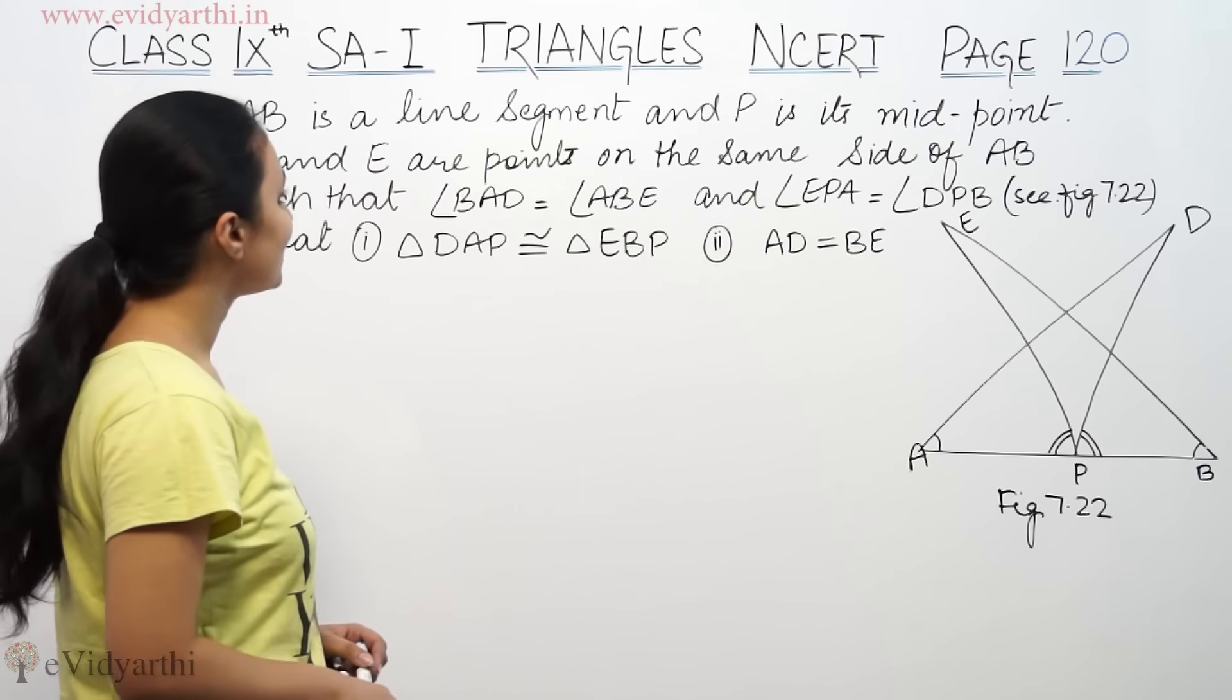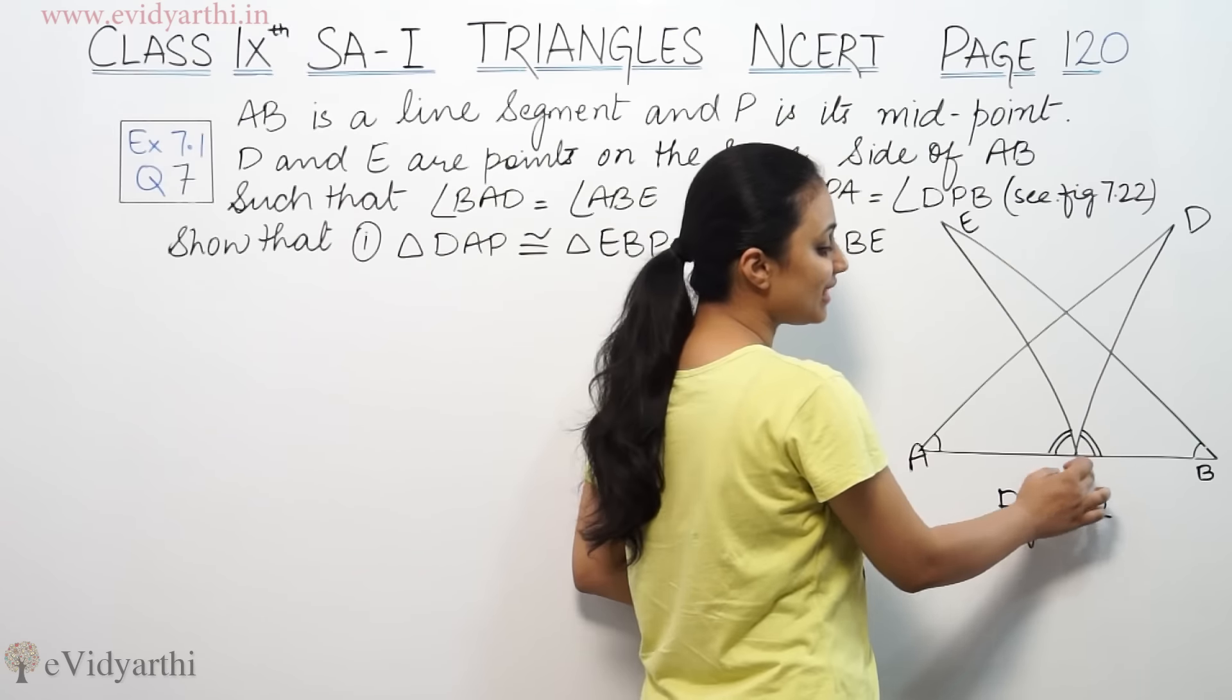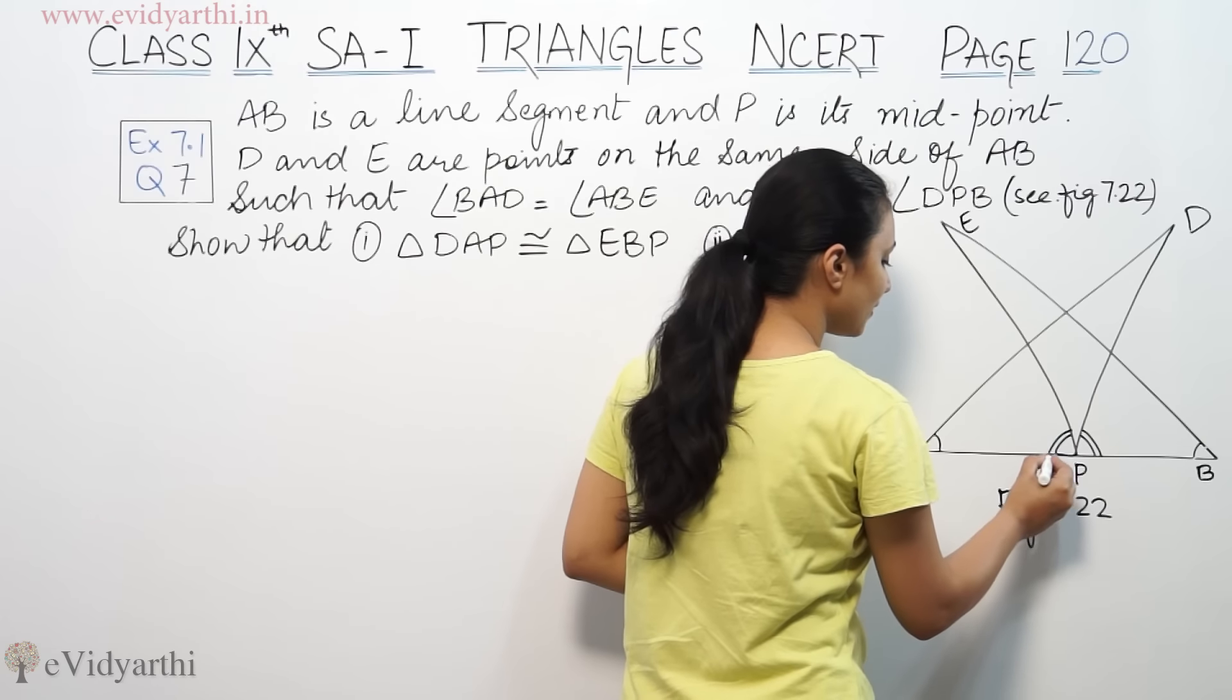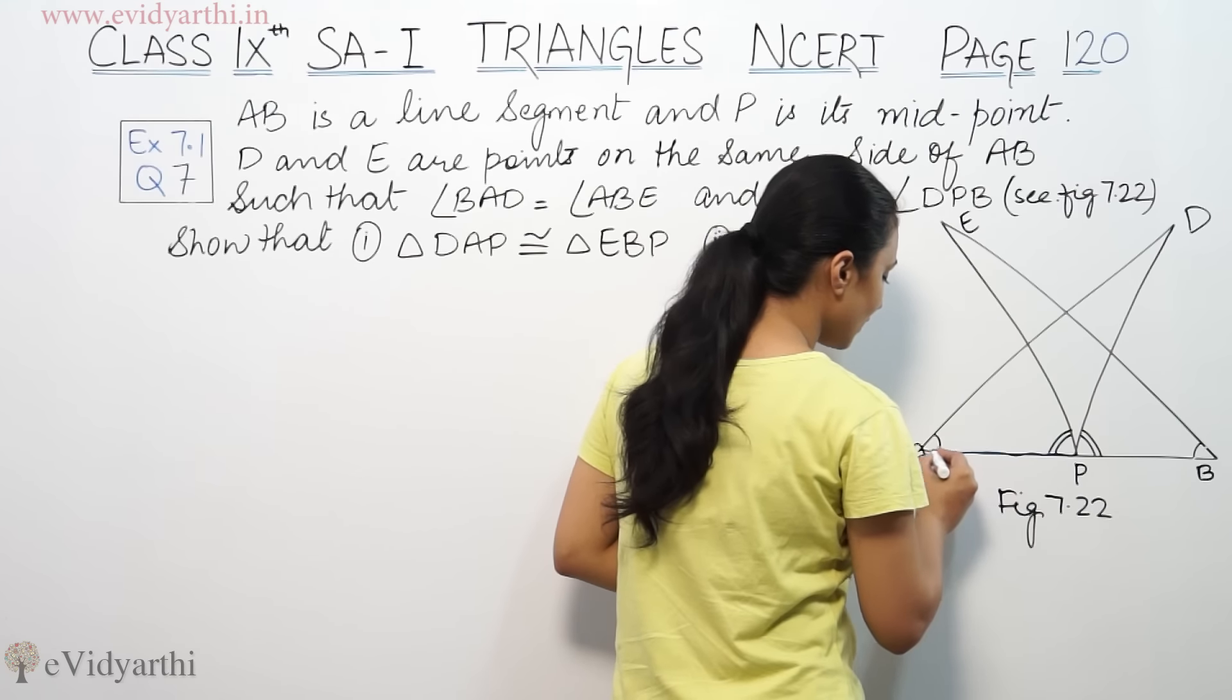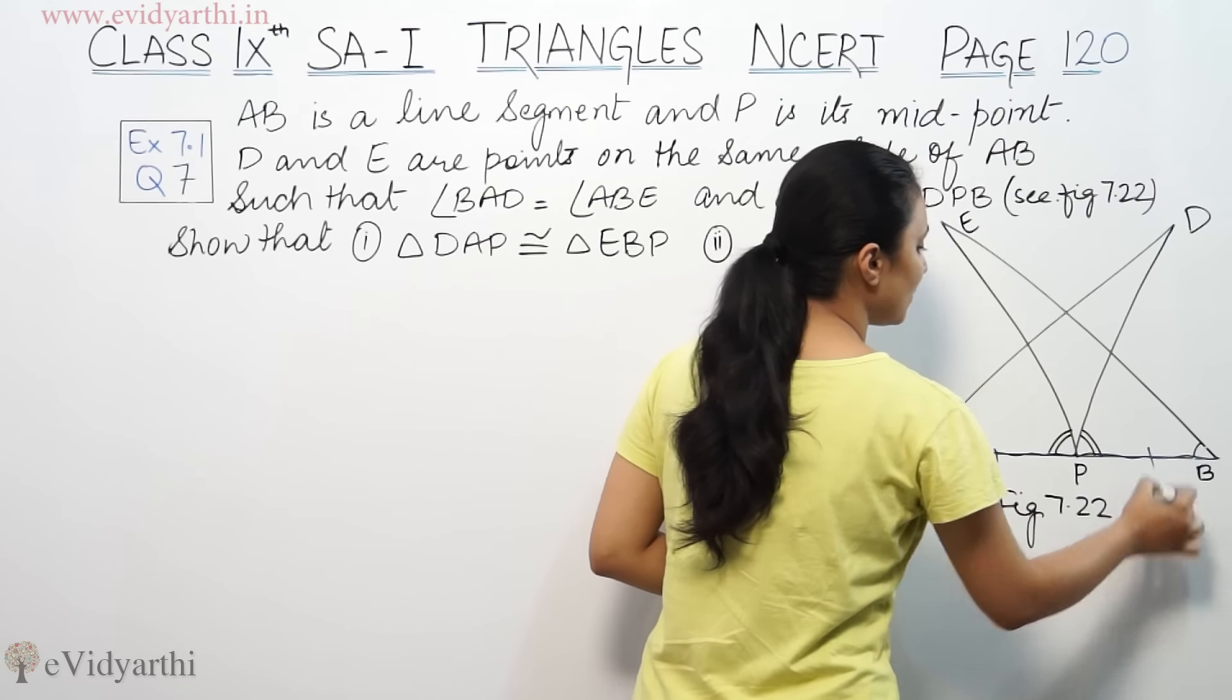This says AB is a line segment and P is its midpoint. AB is a line segment and P is a midpoint. Midpoint means that this AP, this length is equal to PB.